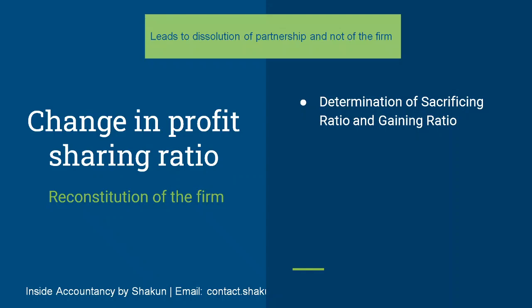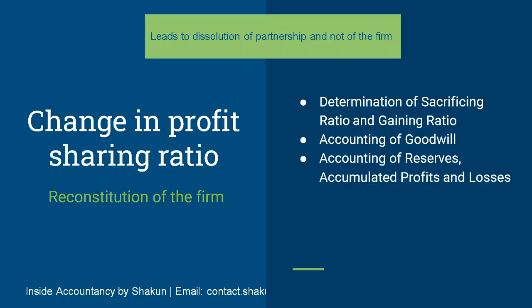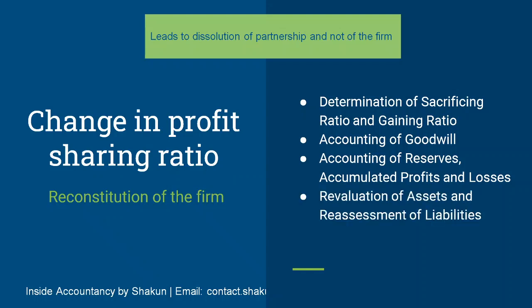The issues which have to be addressed at the time of reconstitution of the firm are: determination of sacrificing and gaining ratio; accounting treatment of goodwill, whether existing goodwill or new goodwill; accounting treatment of reserves, accumulated profits and losses; the revaluation of assets and reassessment of liabilities; and finally the adjustment of capital. So all these issues have to be addressed.